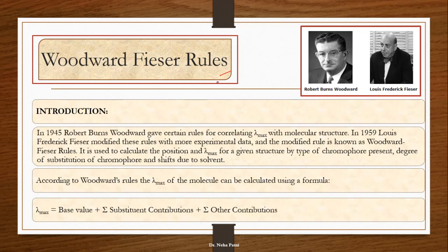We know there is a concept of chromophores and auxochromes, and certain shifts like bathochromic shift, hypsochromic, hyperchromic, and hypochromic shifts based on wavelength and intensity. Once you understand all these patterns and have developed a compound, you can use the Woodward-Fisher rule to predict its absorption wavelength. Woodward started this rule for correlating lambda max with molecular structure, and in 1959 Fisher joined and modified it — the combined rule is now known as the Woodward-Fisher rule.